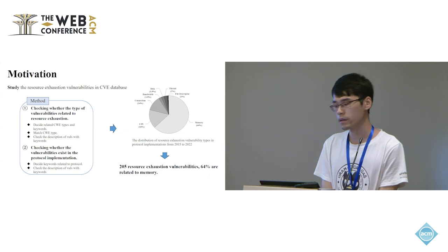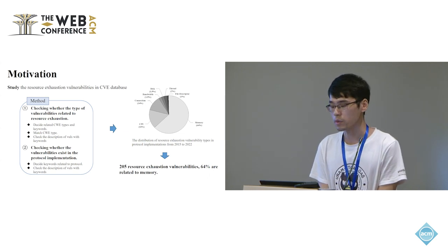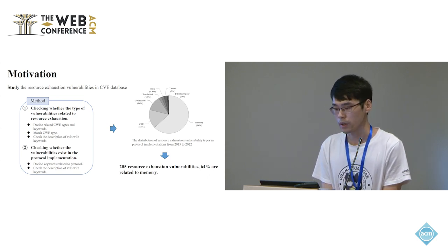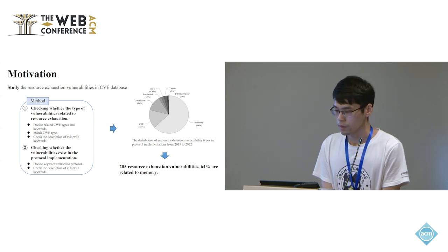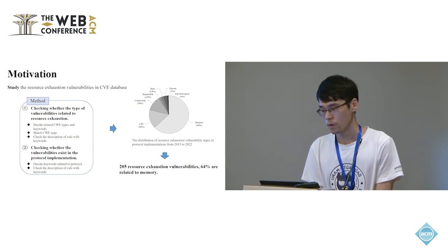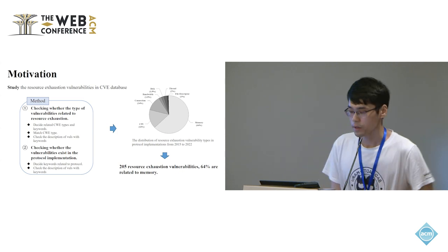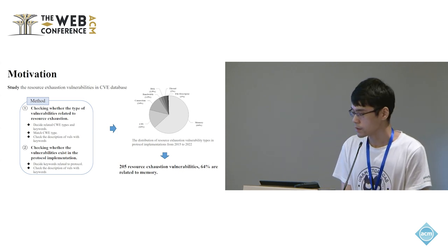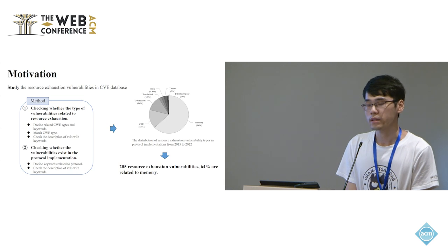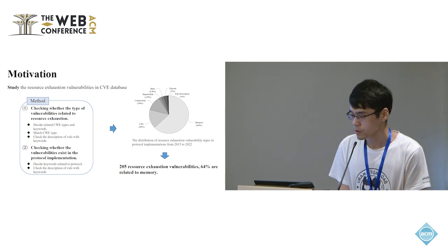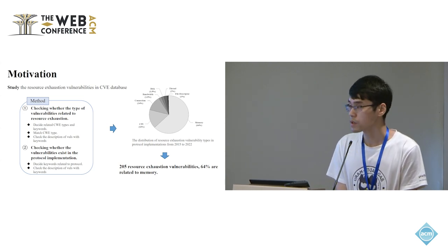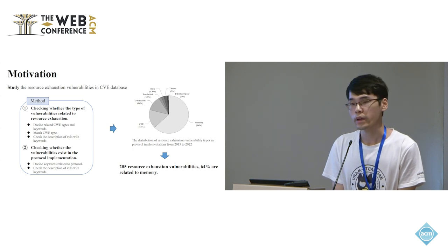To gain a better understanding of the resource exhaustion DoS vulnerabilities in protocol implementations, we conducted an empirical study on the common vulnerabilities and exposure, in short CVE database. We used two main steps to automatically identify the target vulnerabilities: checking whether the type of vulnerabilities are related to resource exhaustion, and checking whether the vulnerabilities exist in the protocol implementations. In total, we identified 205 resource exhaustion vulnerabilities. Among these vulnerabilities, 64% are related to memory resource. So in this work, we focus on the memory exhaustion DoS vulnerabilities.